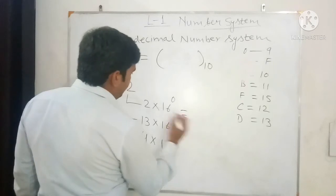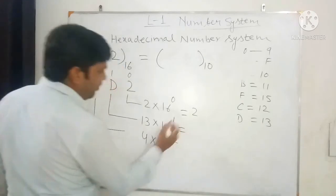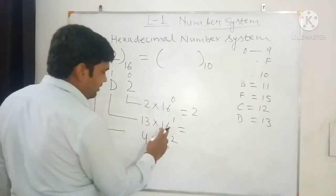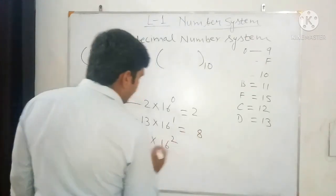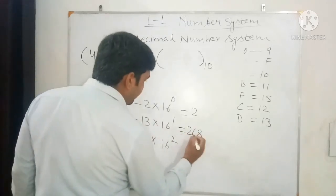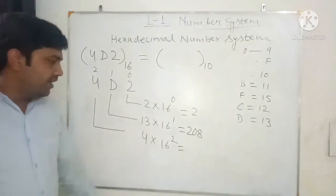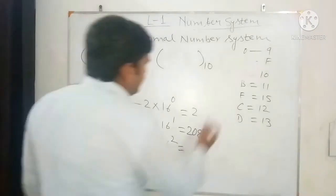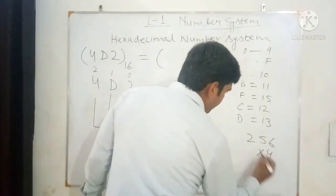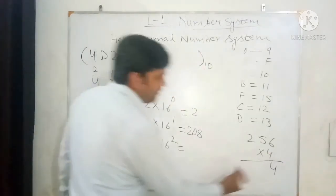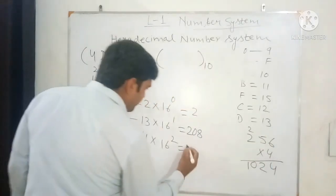Now we calculate each value. 2 multiplied by 16 to the power 0 equals 2. 13 multiplied by 16 to the power 1: 16 squared is 256. 13 times 16 equals 208. 4 multiplied by 16 squared (256) equals 1024.